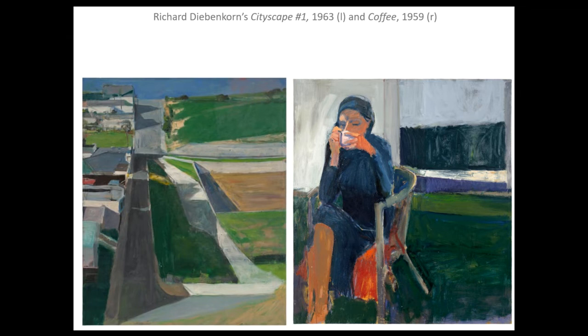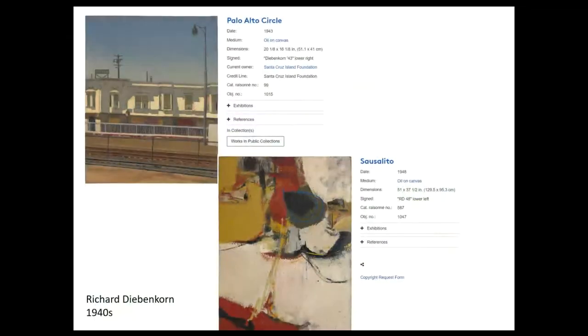Some of my work looked a little bit like Diebenkorn's, and this would be a starting point for thinking about someone who might be influential in my own work. As you are looking at your own influences, one of the main ways of looking into the past to find related artists is to look at an artist you really admire and see if you can find some biographical background on them.